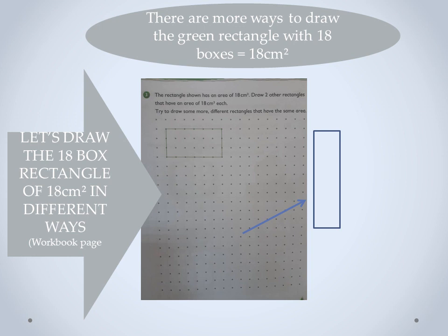Let's count the original shape — the length has one, two, three, four, five, six boxes, so the length is six. The width has one, two, three boxes, so it's six by three. You can also make it three on the length and six on the breadth, or nine on the length and two on the width. You can arrange it any way you want, just make sure you have 18 boxes.